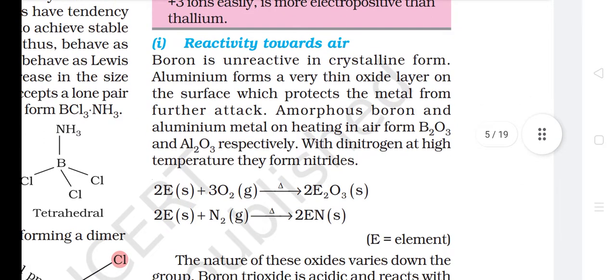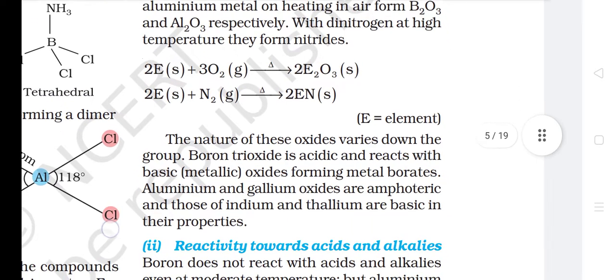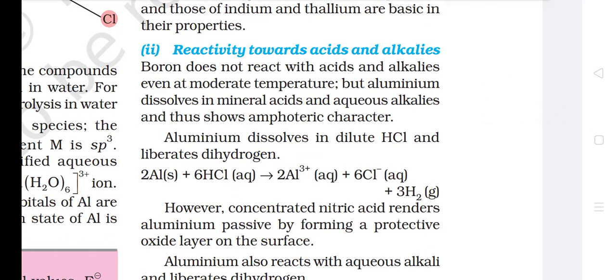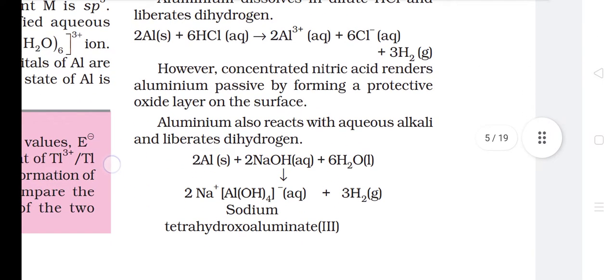Reactivity towards air: Boron is unreactive in crystalline form. Aluminium forms a very thin oxide layer on the surface which protects the metal from further attack. Amorphous boron and aluminum metal on heating in air form B2O3 and Al2O3 respectively. With dinitrogen at high temperature, they form nitrides. The nature of these oxides varies down the group: boron trioxide is acidic and reacts with basic metallic oxides forming metal borates; aluminium and gallium oxides are amphoteric; those of indium and thallium are basic. Reactivity towards acids and alkalis: Boron does not react with acids and alkalis even at moderate temperature. Aluminium dissolves in mineral acids and aqueous alkalis, showing amphoteric character. Aluminium dissolves in dilute HCl and liberates dihydrogen. However, concentrated nitric acid renders aluminum passive by forming a protective oxide layer. Aluminium also reacts with aqueous alkali and liberates dihydrogen.